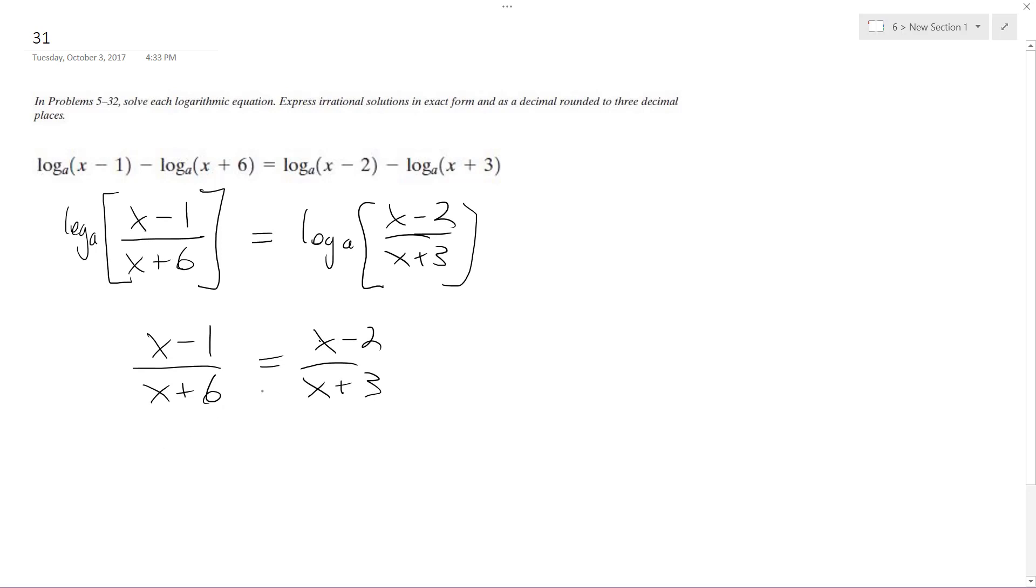So we're just going to cross-multiply. So we get x minus 1 times x plus 3 is equal to x minus 2 times x plus 6, x squared plus 2x minus 3 is equal to x squared plus 4x minus 12.